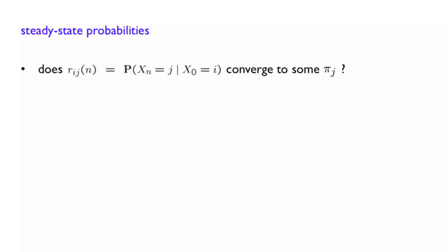We are asking whether the probability of being in state j at time n, given that you started at time 0 in state i, converges to some constant pi of j. In fact, that question consists of two parts. Do we have convergence? And is it independent of i?